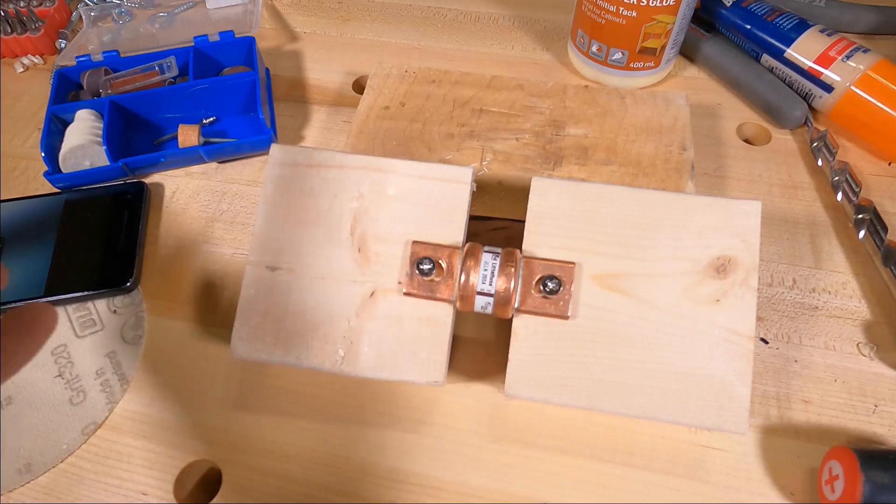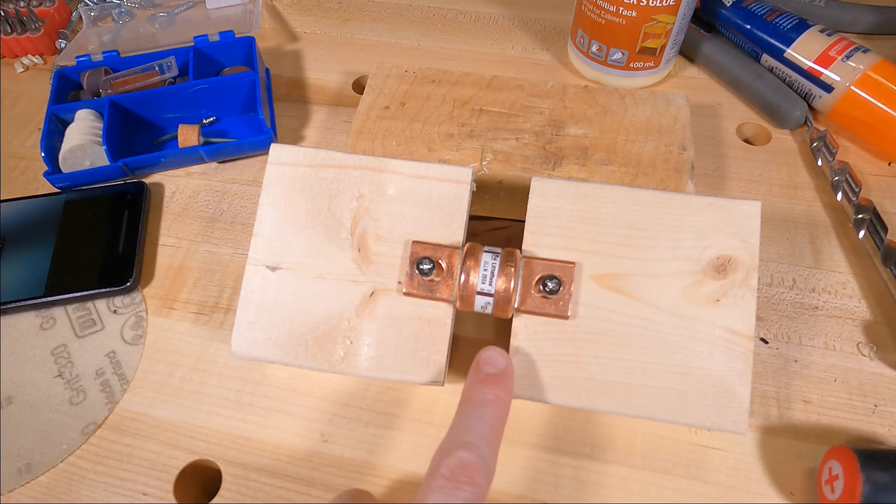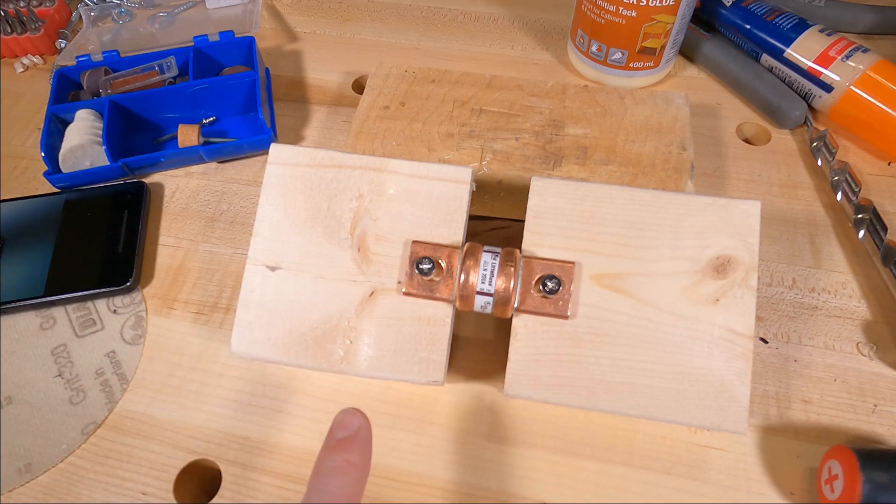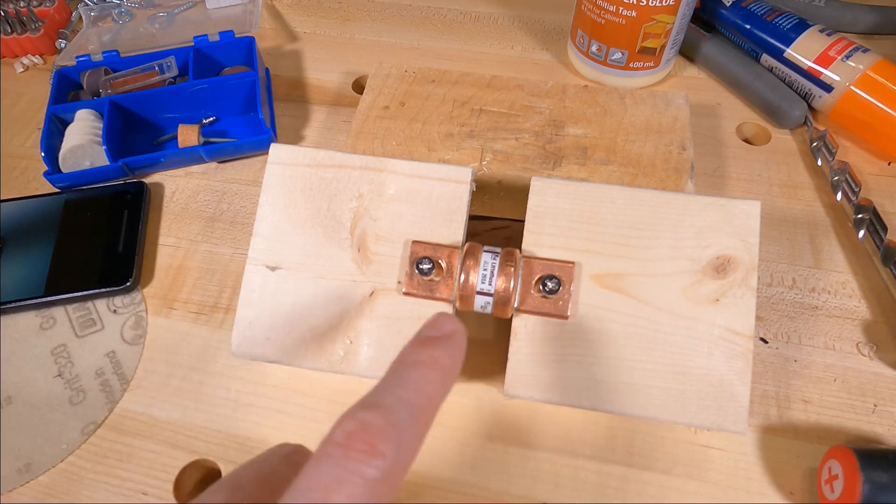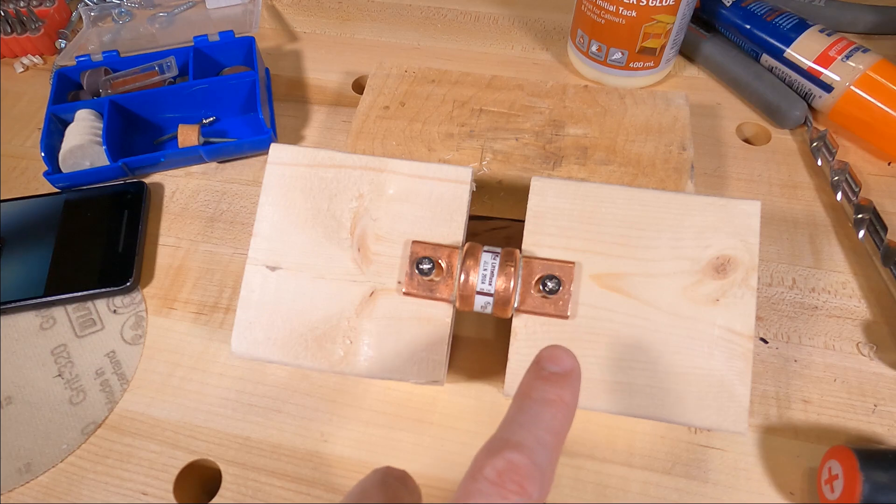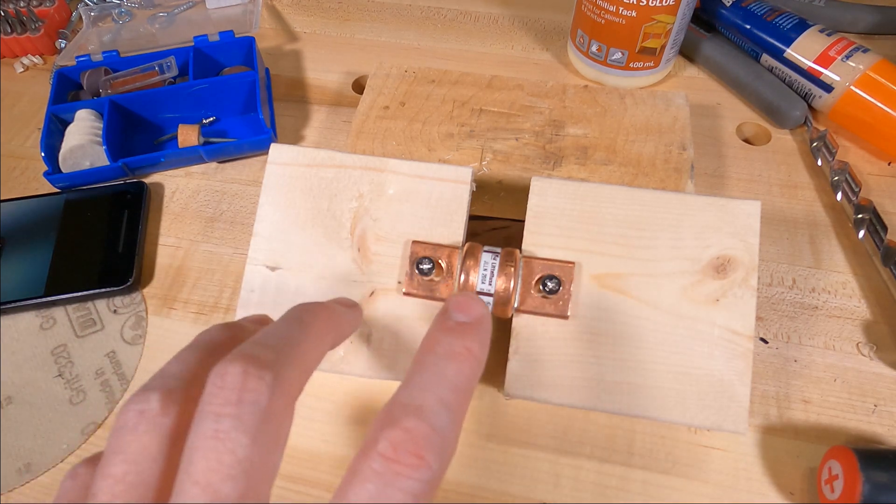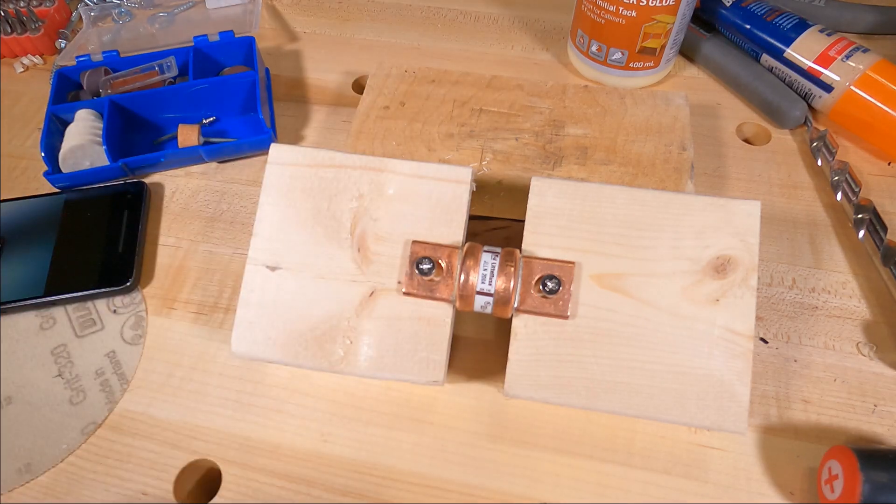This is, as I mentioned in previous videos, filled with silica sand so that if the metal strip that carries the current ruptures, as it did, to prevent the electricity from continuing to flow just because it's arcing over such a short gap, they have sand that quenches the arc. So I thought it'd be fun to rip it open.